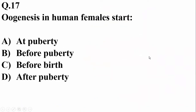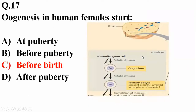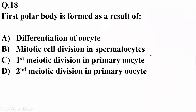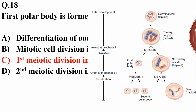Question number seventeen: oogenesis in human females starts at or before birth, but it is completed for the first time at puberty and continues up till menopause. Question number eighteen: the first polar body is formed as a result of the first meiotic division in the primary oocyte — as you can see, the first polar body results from meiosis one.